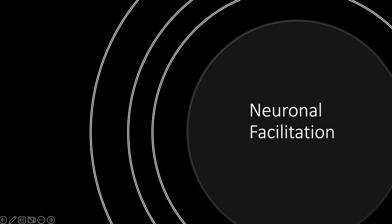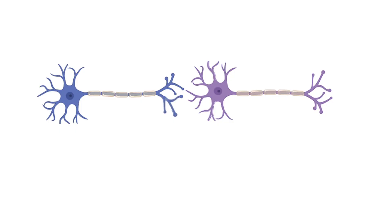This is a video on neuronal facilitation. In order for two neurons to communicate, they send neurotransmitters to each other, but the strength can be controlled using inhibition and facilitation. Today we will talk about facilitation.